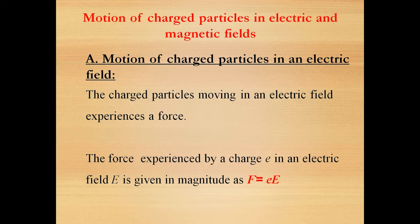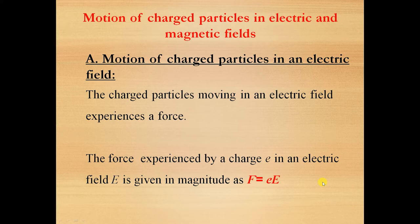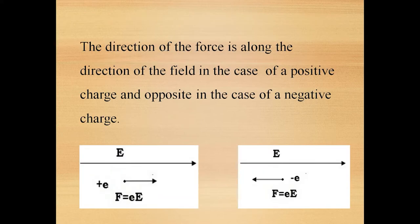We wanted to see what is the effect of electric and magnetic field on electrons. We discussed the effect of electric field on the moving electrons. These electrons will experience a force when they are subjected to an electric field and the force experienced is given by F = eE, where small e is the charge of the electron and capital E is the strength of the electric field. The force is in the direction of the field for a positive charge and opposite for a negative charge.